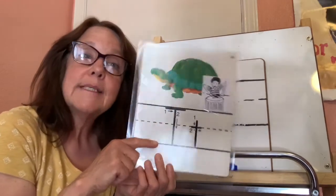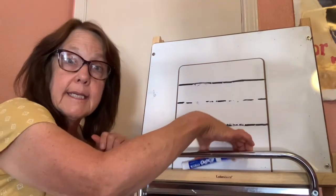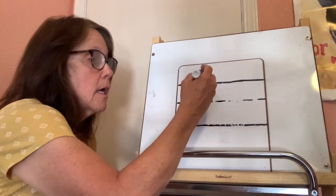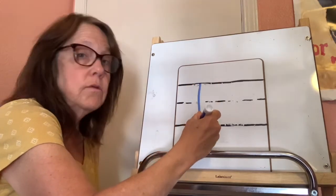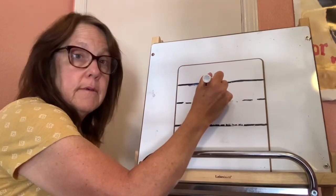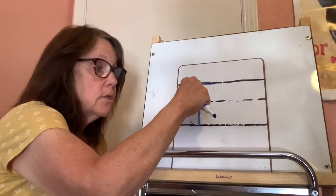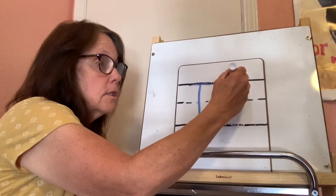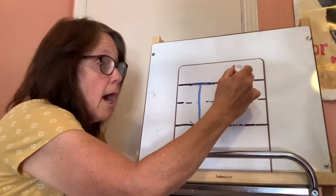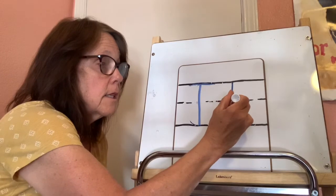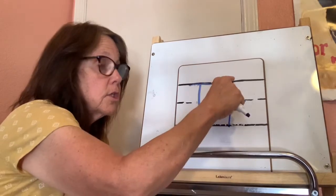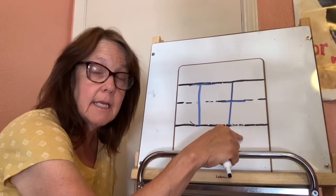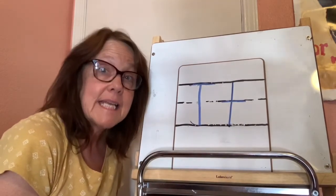Now let's write it on the board. As I write it on the board, you can write it in the air with your magic finger. Ready? Start at the top, straight down, across the top. Now use your magic finger: top, straight down, across the middle. Now let's do the lowercase T — it's a tall letter also. Top, straight down, across the middle. Get your magic finger: top, straight down, across the middle. Good job writing the capital and lowercase T! Now get a paper and a pencil and see how many T's you can write.